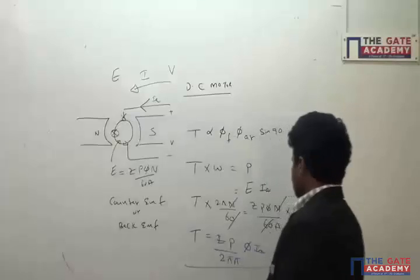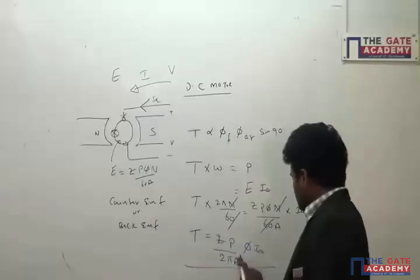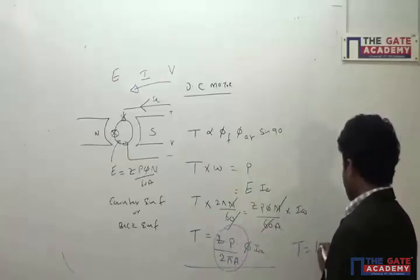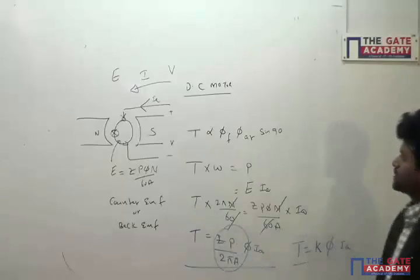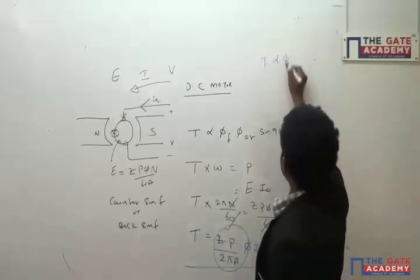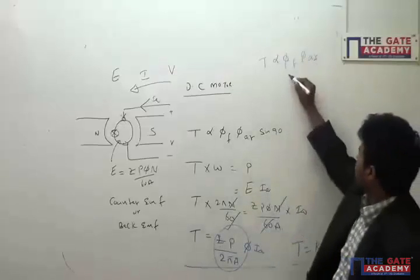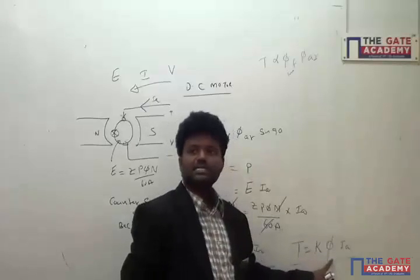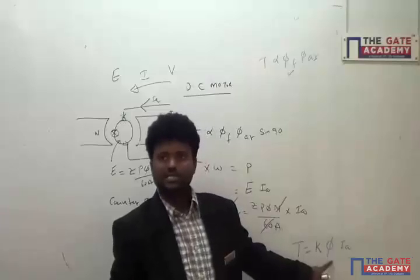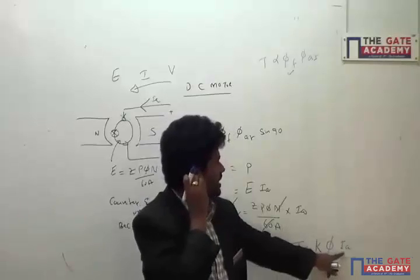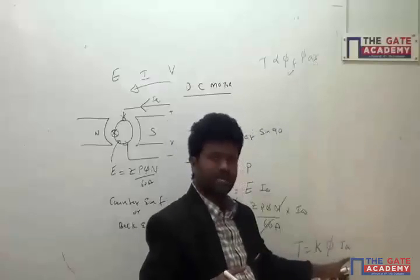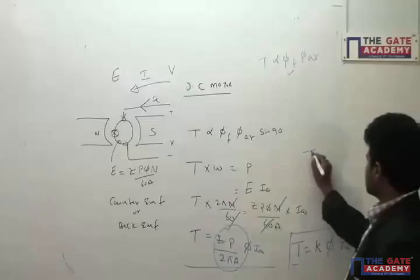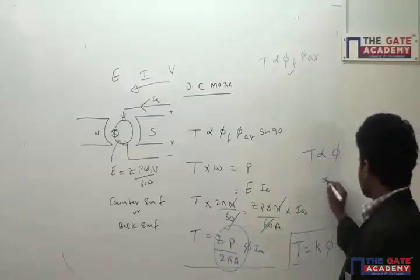The torque equation becomes T = (ZP / 2πA) × φ × IA. The entire term ZP/(2πA) is a constant, since number of conductors, poles, and parallel paths are fixed. So the torque equation simplifies to T = K·φ·IA. Torque is proportional to field flux φ and armature flux, where IA is directly proportional to armature flux φAR. Neglecting armature reaction, torque is directly proportional to flux and armature current.